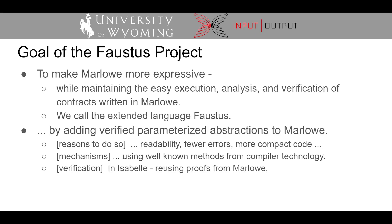That leads us to the goal of the Faustus project, which is to extend Marlowe to be more expressive while maintaining Marlowe's ability to execute on the blockchain and still allow for easy analysis and verification of contracts. We call the new language we have created Faustus. We aim to achieve our goal by adding parameterized abstractions to Marlowe to promote readability, fewer errors, and more compact code. In addition to integer variables that already exist in Marlowe, blockchain wallet addresses, boolean values, and pieces of contracts can now be associated with variable names for reuse in a Faustus program.